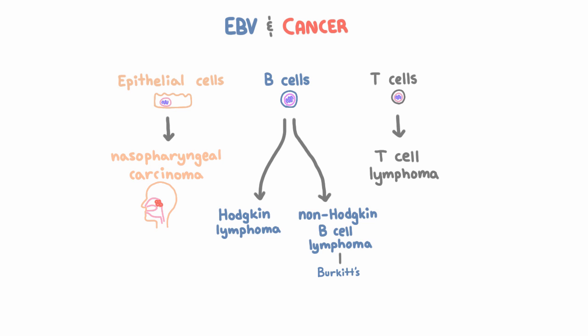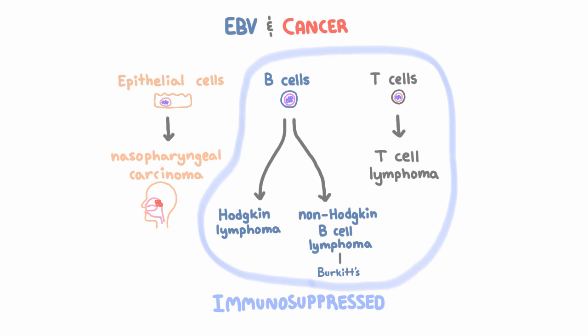You might not know what all these different cancers are exactly, and that's fine, but at least understand the underlying mechanism. Something interesting is that people who are immunosuppressed, especially people with HIV, get a lot more of these cancers, especially the lymphomas. Now that we've talked about all the mechanisms, the reason should be clear: the more immunosuppressed you are, the more EBV can disseminate, and the more it'll produce its genes that contribute to the formation of cancers.